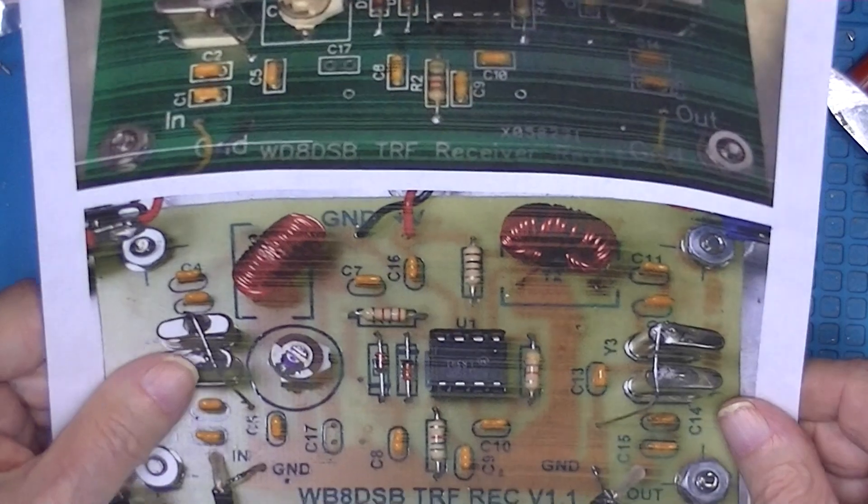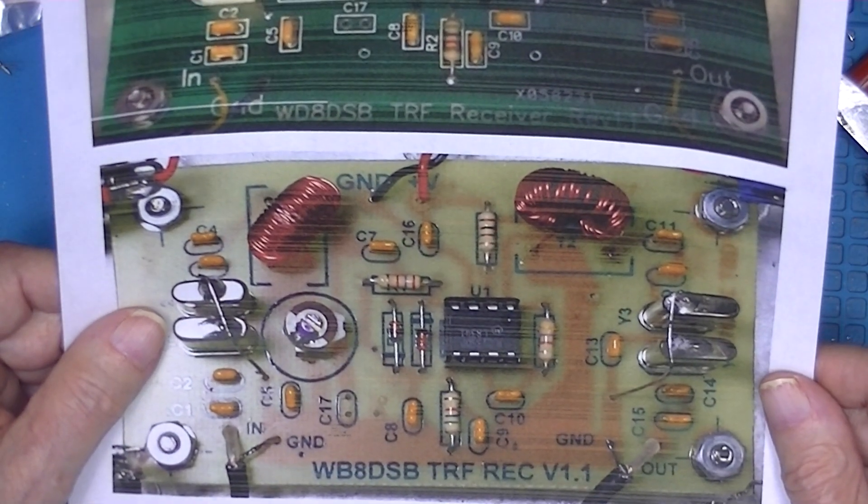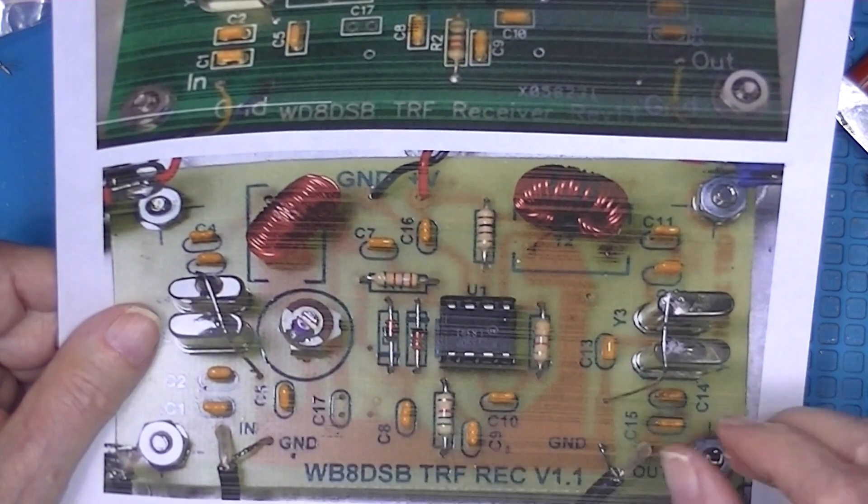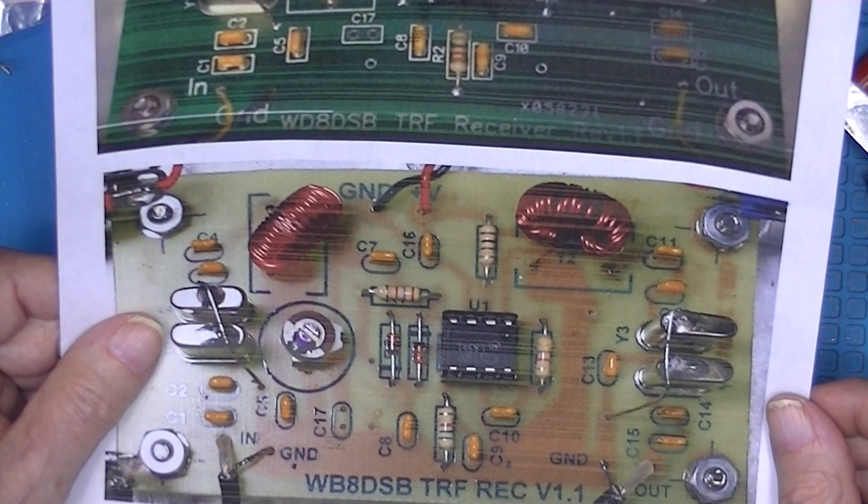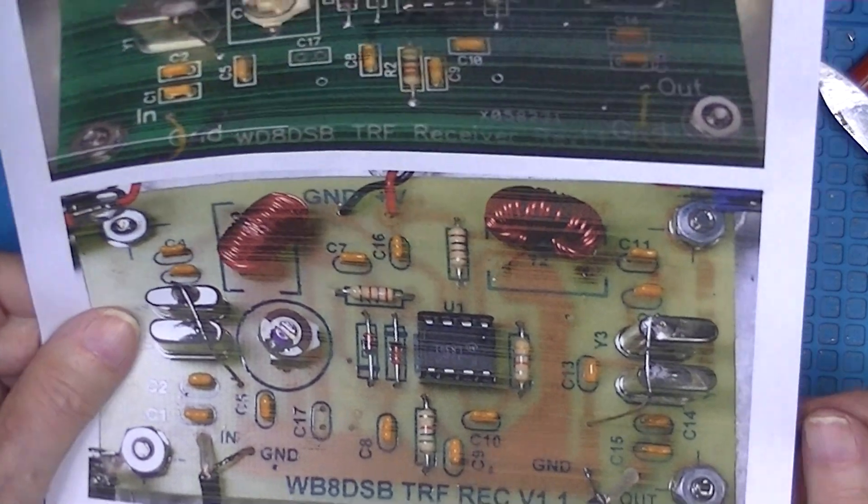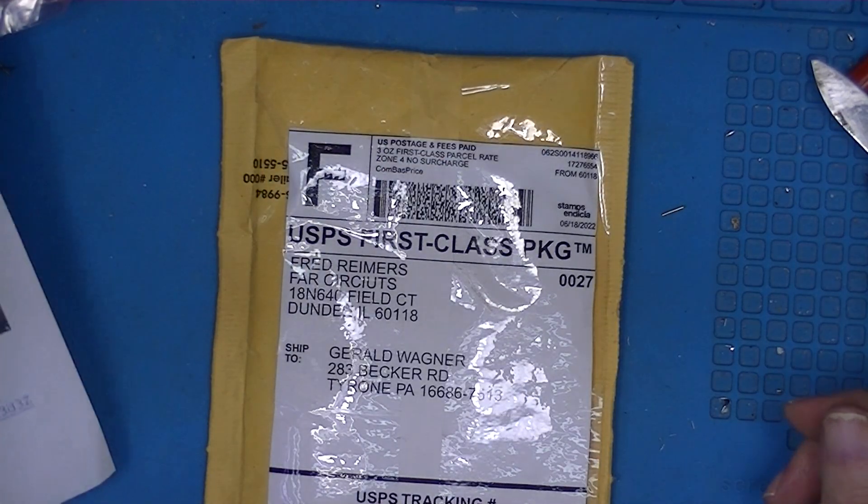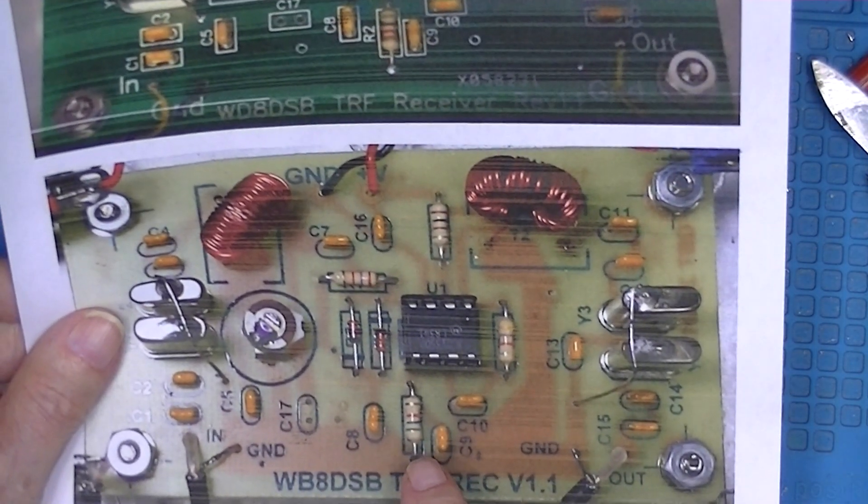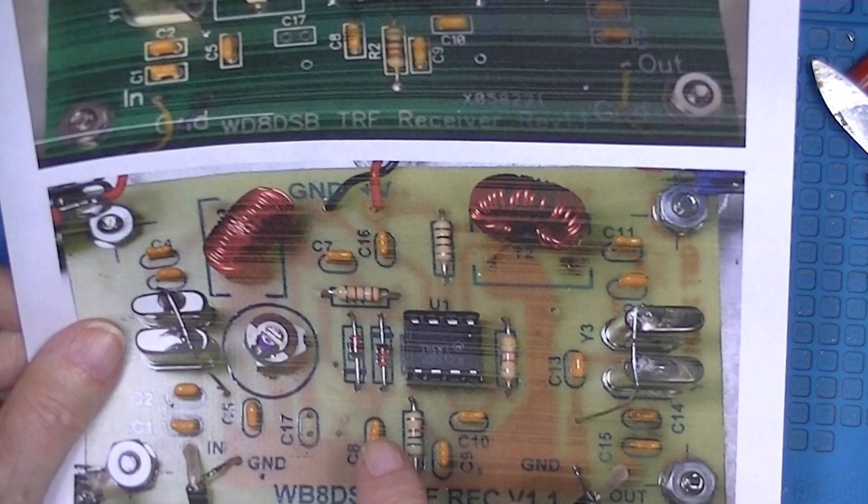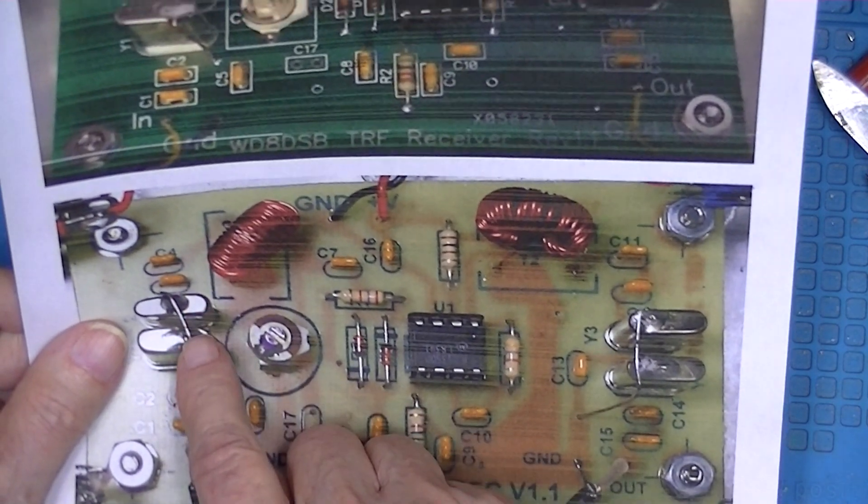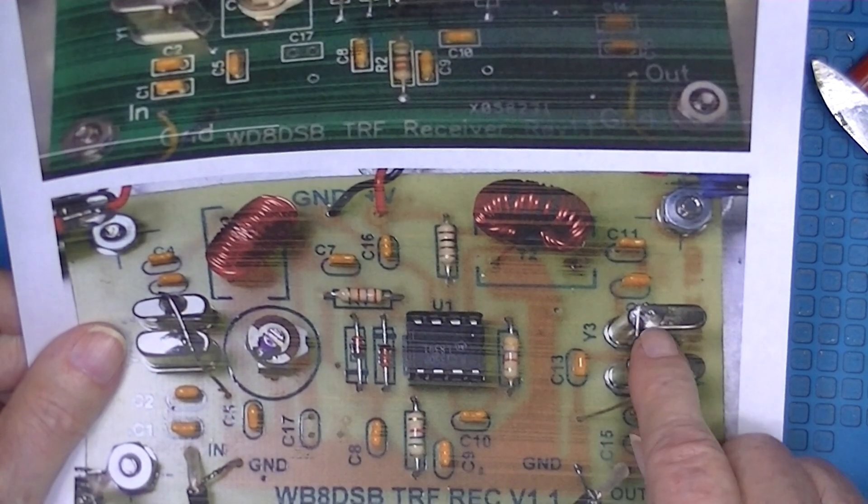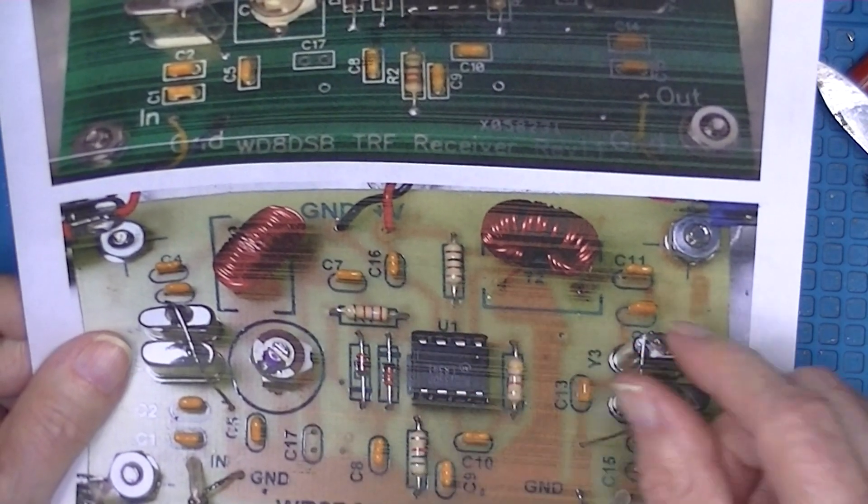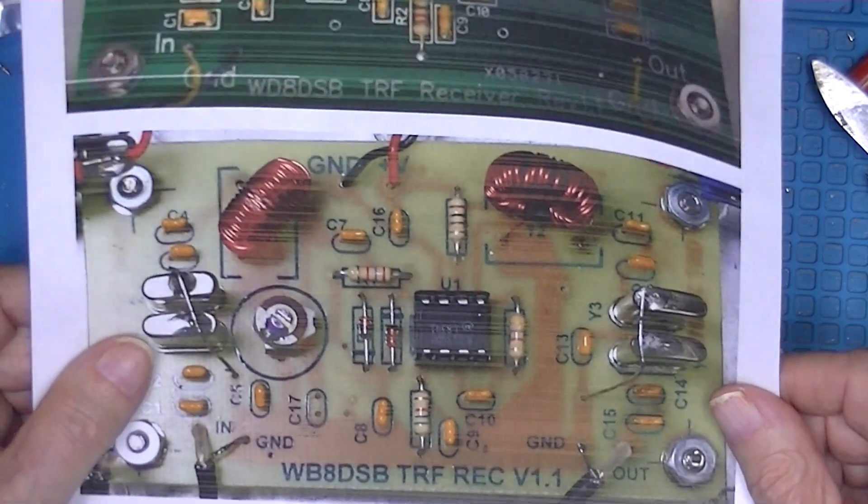Here's the same receiver on a board offered by a commercial board house named FAR Circuits. I ordered—you can pick any frequency you want by picking crystals and maybe varying the turns on transformers. This is a 10 megahertz build.